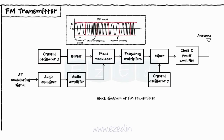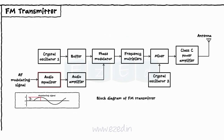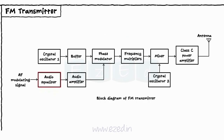The modulating signal is applied to the audio equalizer, which is basically an integrator. The output of the equalizer is applied to the audio amplifier. The phase modulator accepts the carrier and the modulating signal and produces the frequency modulated signal at the output.